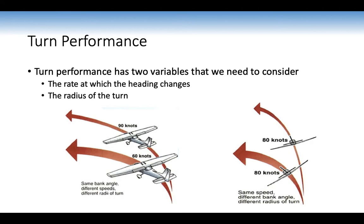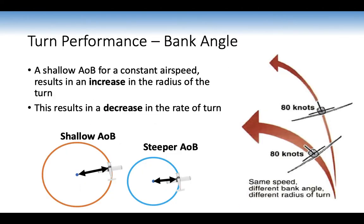Turn performance has two variables: the rate at which heading changes and the radius of turn. A shallow angle of bank at constant airspeed results in an increased radius of turn and decreased rate of turn. Like in a car: a small steering wheel movement needs a larger radius and produces a smaller rate; more wheel movement gives a smaller radius and larger rate. In the training area, a 360-degree turn completes much quicker at 30 degrees of bank versus 15 degrees.